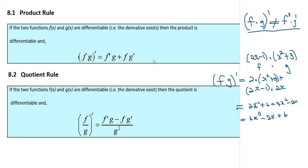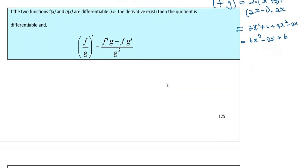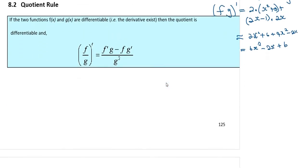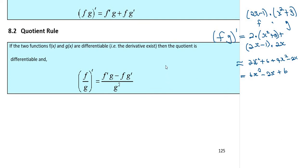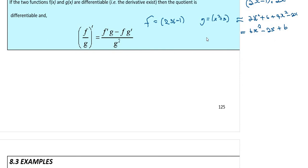That's how we do the product rule — it's really not difficult. Now let's look at the quotient rule. We'll use the same two functions: f equals 2x minus 1 and g equals x squared plus 3.